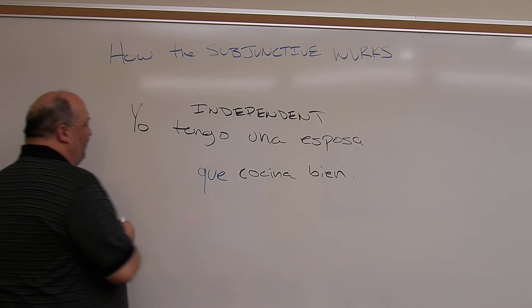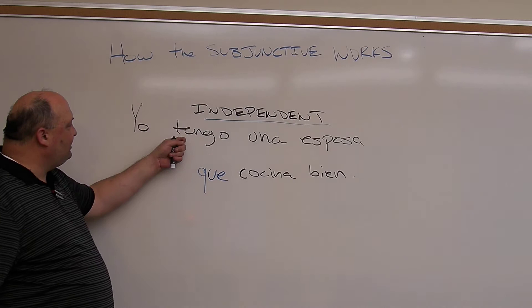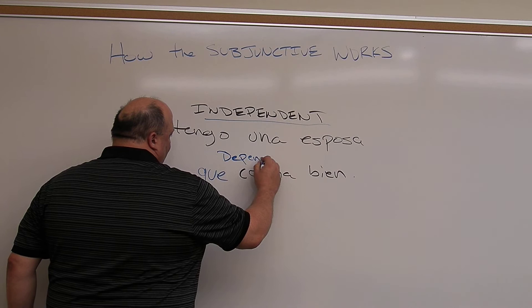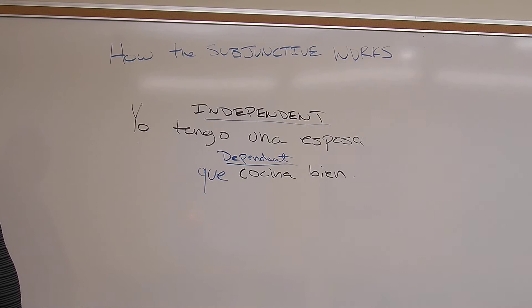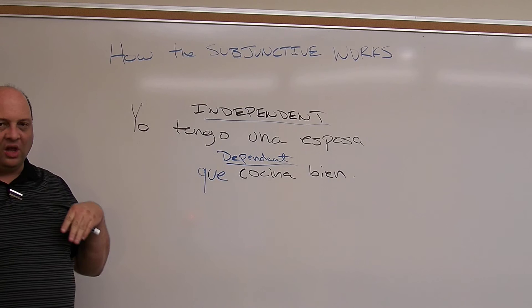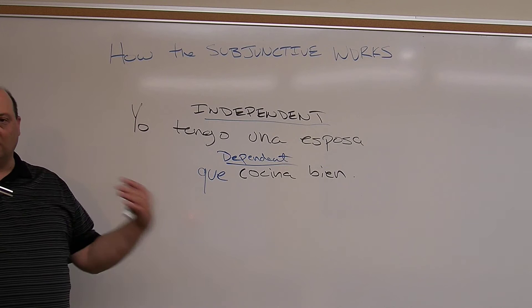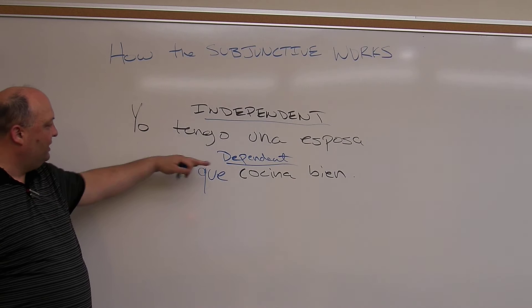This other clause depends on the first one for meaning, so it's called a dependent clause. It can't be used all by itself. It's also called a subordinate clause or antecedent clause — there are different names. This clause is dependent or subordinate to the first clause; it gets its information from it and won't make sense without it.